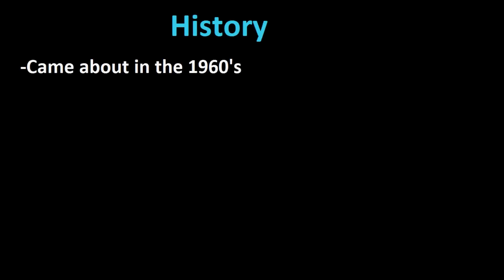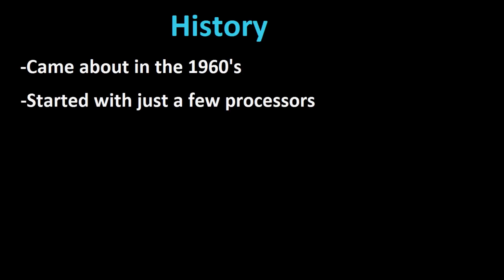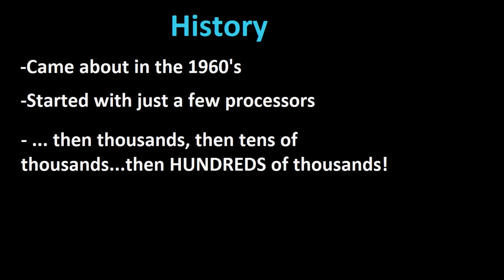Supercomputers have been around for a while. They were first introduced in the 1960s but had very little purpose initially — just a few processors tied together. By the 90s there were supercomputer setups with thousands of processors. Nowadays we've seen supercomputers with tens of thousands or even hundreds of thousands of processors, which gives you an idea of the growth and evolution over time.